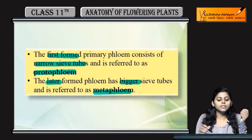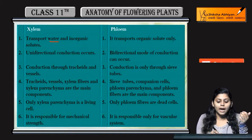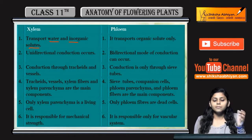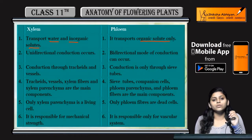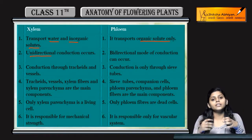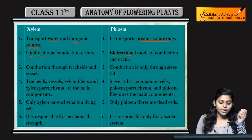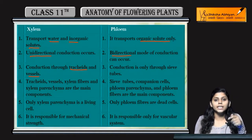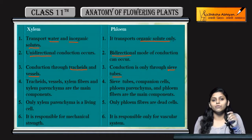Let's discuss the differences between xylem and phloem. Xylem transports water and inorganic solutes, whereas phloem transports organic solutes or food. Conduction in xylem is unidirectional, while phloem is bidirectional. Conduction is through tracheids and vessels in case of xylem, and through sieve tubes in case of phloem.